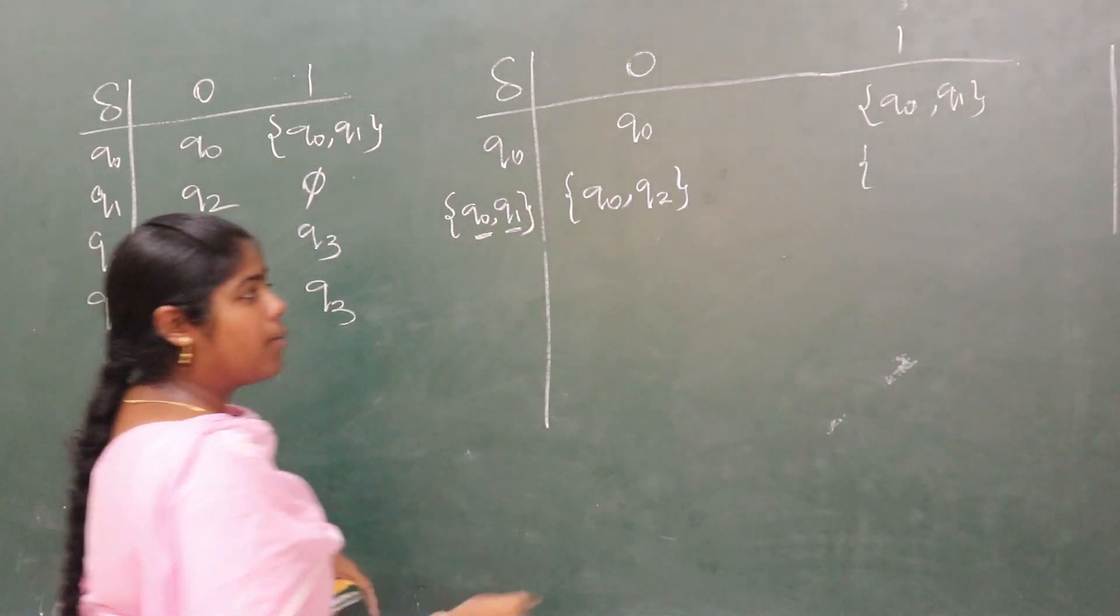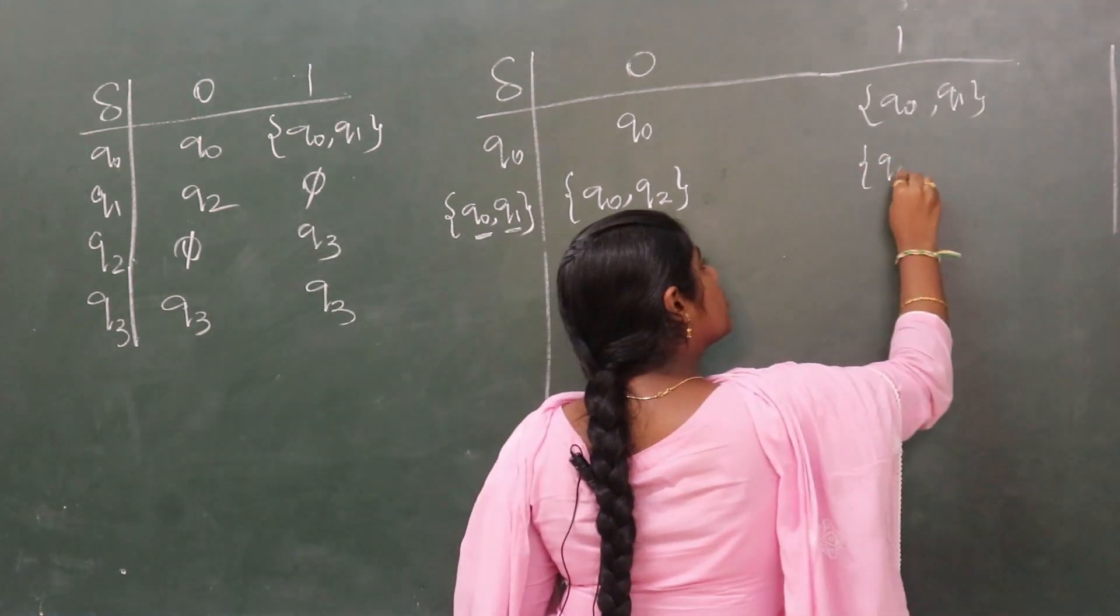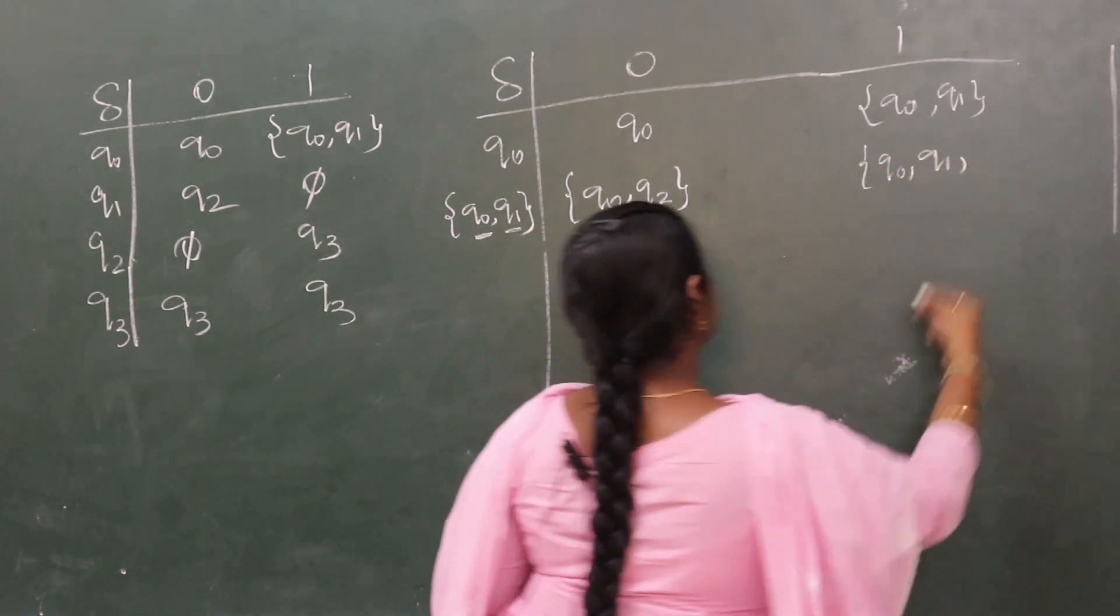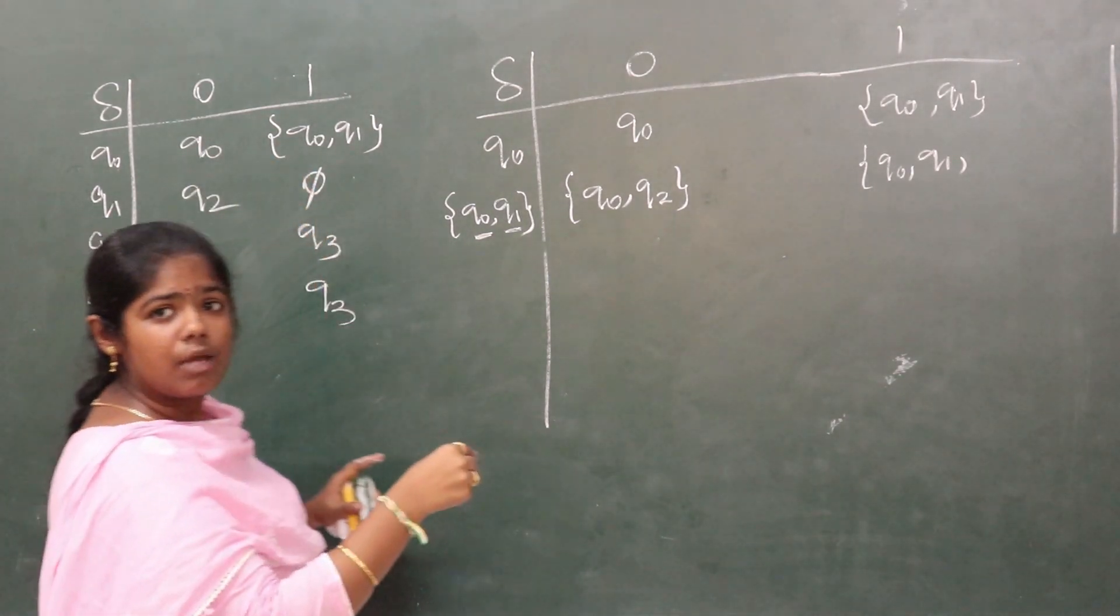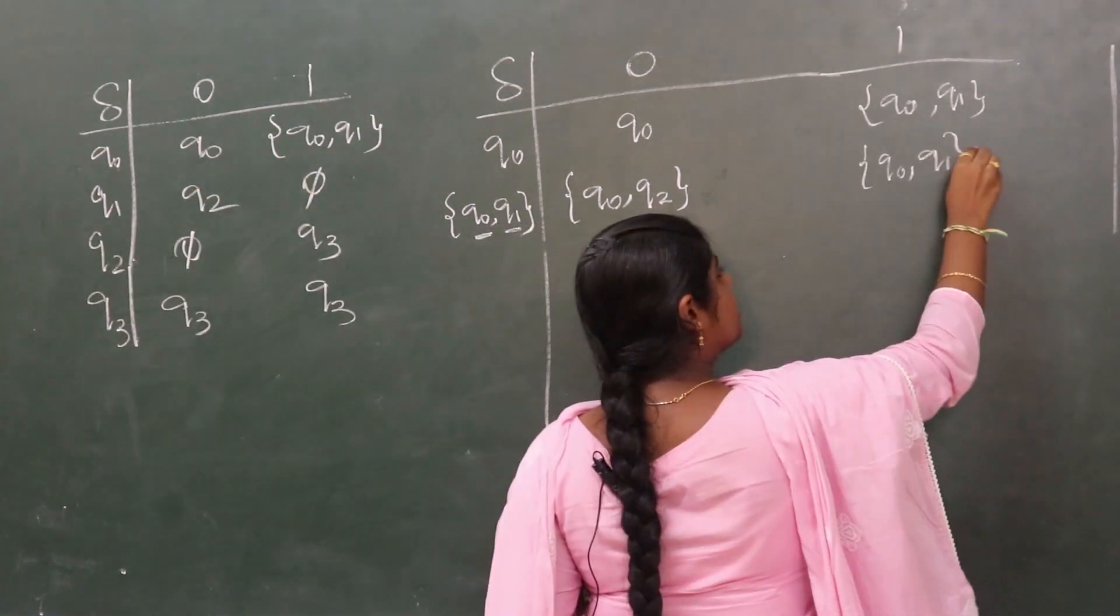q0 on 1 goes to q0, q1. Similarly, q1 on 1 is null set, so only these states remain. So this set is over here.